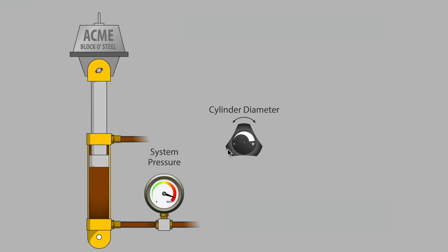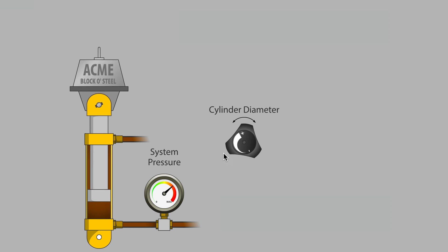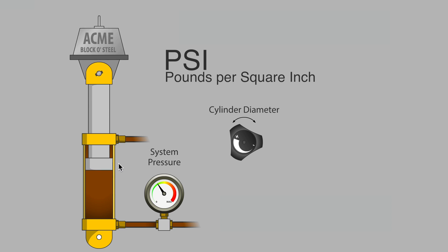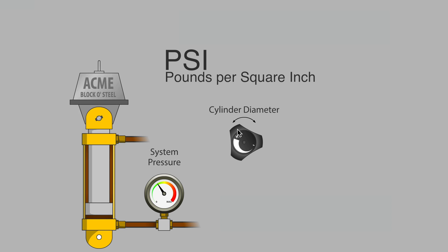Good old acme block of steel here up on top of our cylinder hasn't changed its mass. Yes, it remains the same, but obviously as we resize the cylinder, we're working with different surface area on the bottom of the piston. In fact, in North America, the typical pressure unit is psi, square inch is literally there in the term, an indication of surface area.